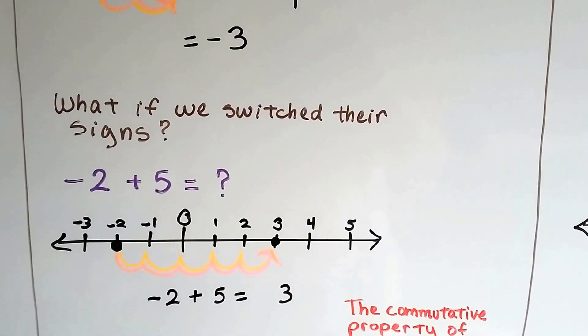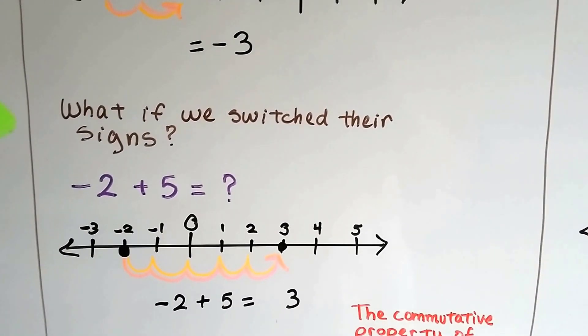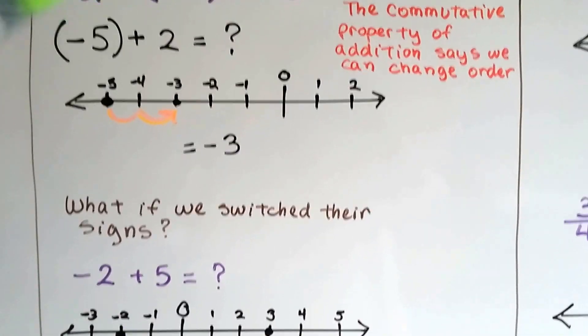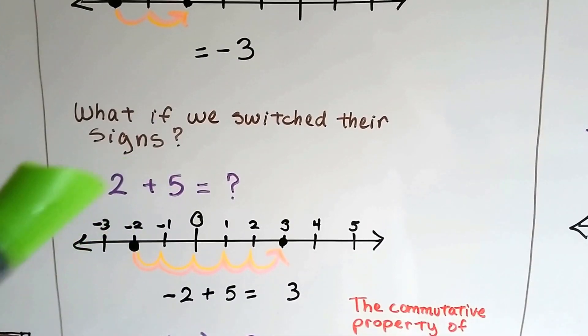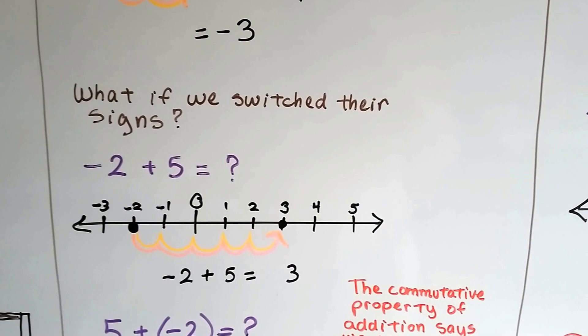What if we switched their signs though? What if instead of positive 2 and negative 5, we had negative 2 and positive 5, and their signs were switched? What would happen?